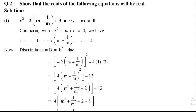The discriminant formula is D equals b squared minus 4ac. By substituting the values of a, b, and c in discriminant, that is minus 2 into m plus 1 divided by m whole squared. Minus 2 whole squared is equal to plus 4 into m plus 1 divided m whole squared minus 4 times 3 is 12.